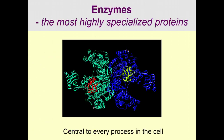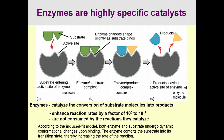The enzyme is the most highly specialized protein and is central to every process in the cell. Enzymes catalyze the conversion of a substrate into a product, speeding up chemical reactions by a factor of 10⁵ to 10¹⁷. Many biological reactions would occur naturally without enzymes but so slowly as to be nonfunctional. Enzymes are not consumed by the reactions they catalyze and can convert substrate to product over and over.